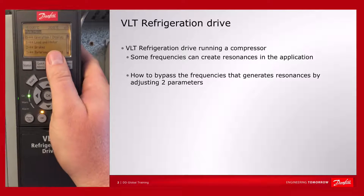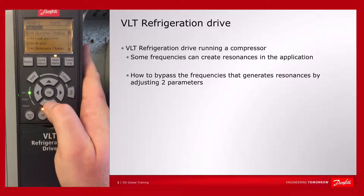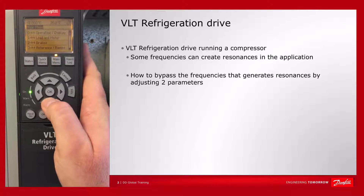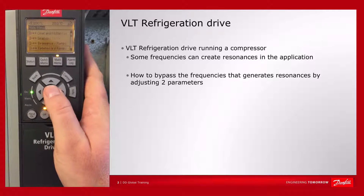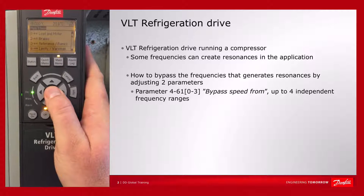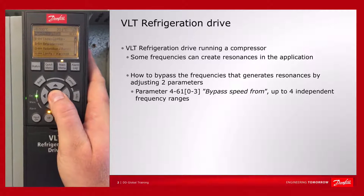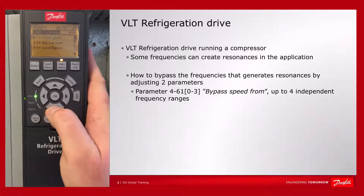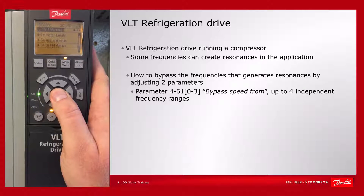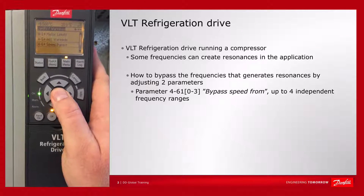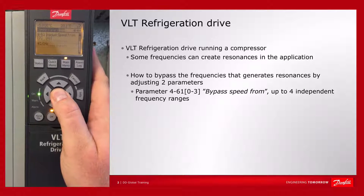Go to the main menu, then go down to parameter group 4, Limits and Warnings, and select 4.6 Speed Bypass.